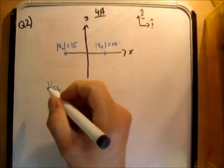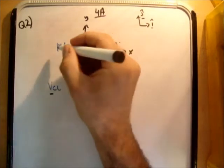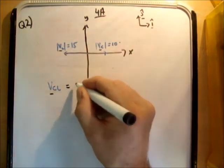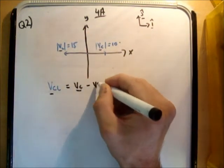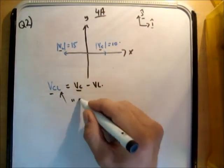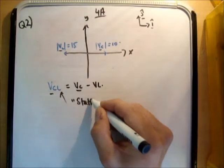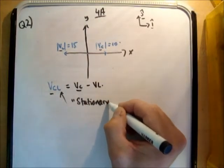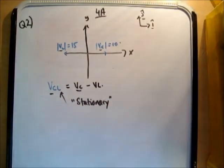Well first of all, it's a vector, and so are these. And its formula is Vc minus Vl. But what it physically means is that the lorry can be considered to be stationary. It's in a frame of reference whereby he can consider himself to be stationary.